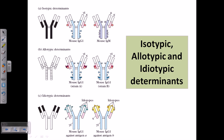Now let us talk about another important concept: isotypic, allotypic, and idiotypic determinants that are present on the surface of immunoglobulins, because they are proteins. We have talked about the constant region of the heavy chain and the light chain. Isotypic determinants are something which is found to be common in a whole species — for example, all the immunoglobulins of all human beings should carry a particular type of sequence similarity.